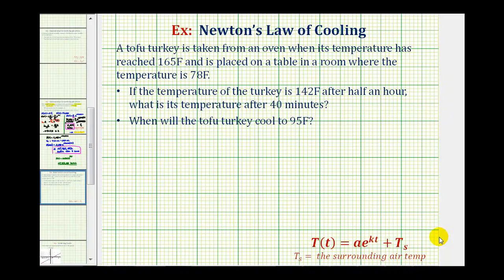Now we'll look at an application of Newton's law of cooling given by this function: T of t equals a times e raised to the power of kt plus T sub s. Where T of t is the temperature of the object, a is a constant, k is the cooling rate expressed as a decimal, t is the time, and T sub s is the surrounding air temperature.